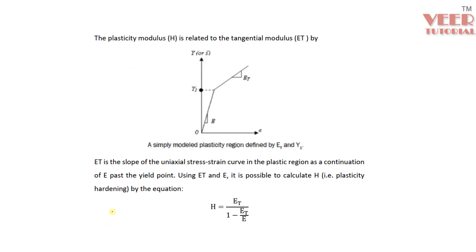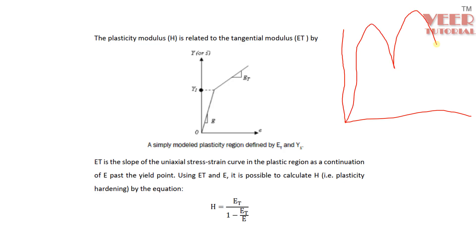In HyperMesh we can define plasticity or material nonlinearity in two ways: one is by using the plastic modulus curve. The material nonlinear behavior is represented as a smooth curve. For linearity, we consider up to the elastic zone — where X is strain and Y is stress. In the case of nonlinearity, we also consider the curve beyond the elastic zone, so we have an elastic zone and a plastic zone.